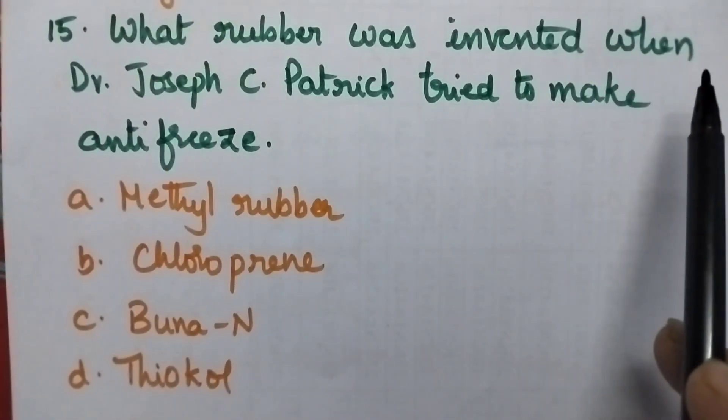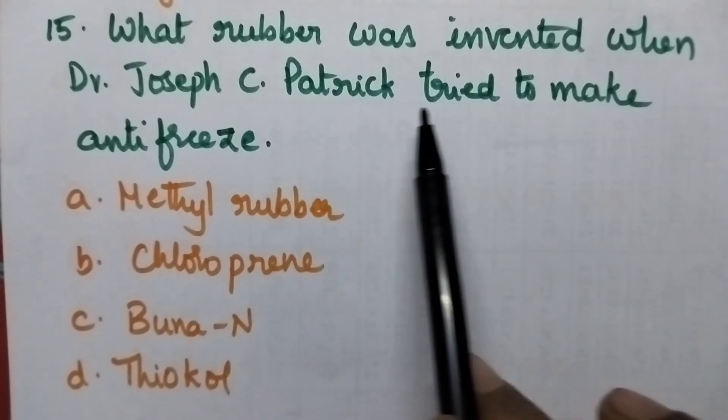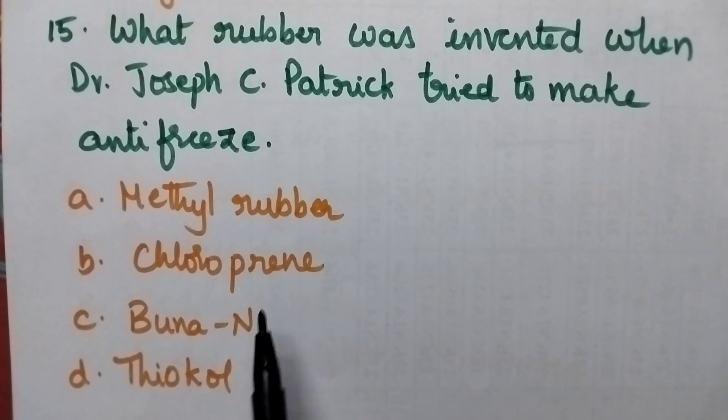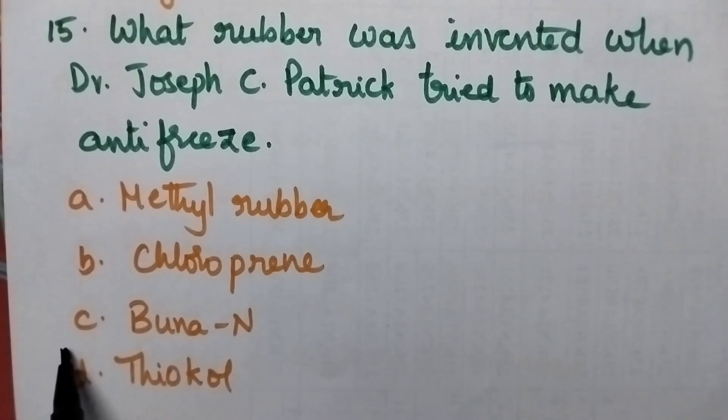What rubber was invented when Dr. Joseph C. Patrick tried to make antifreeze? Option A. Methyl rubber, B. Chloroprene, C. Buna-N and D. Thiokol. So D. Thiokol is the right answer.